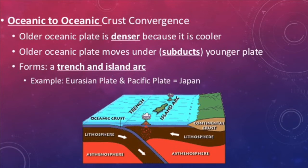If both plates are oceanic, then the older oceanic plate subducts beneath the newer plate because it is denser, mainly because it is much cooler. This forms the same geological features, but both are found in the ocean. The prime example of this is Japan. Japan is an island arc right next to an oceanic trench due to it being found on an oceanic-oceanic convergent boundary.